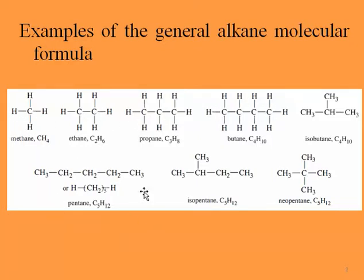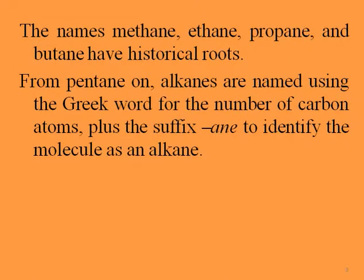Some of these are unbranched, and we can call them either 'normal pentane' or 'n-pentane' or just 'pentane.' Similarly, butane can be called 'normal butane' or 'n-butane' or just 'butane,' meaning we are dealing with an unbranched alkane. The names methane, ethane, propane, and butane have historical roots; from pentane on, alkanes are named using the Greek word for the number of carbon atoms plus the suffix '-ane' to identify the molecule as an alkane.